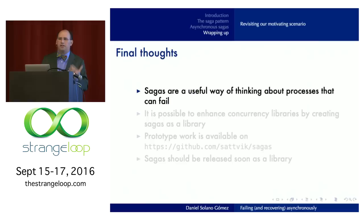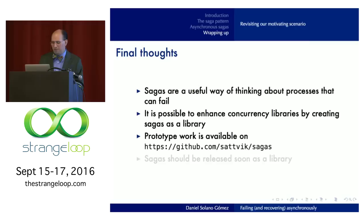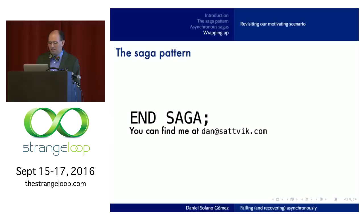My conclusions from looking into this are that sagas are a very useful way of thinking about error recovery. When you have a complex process, how can we break it down into simpler steps that we can then manage? Most importantly for me, I can create libraries that will implement this, which gives me better concurrency building blocks. I can build more robust, reliable systems with less work, because I already spent a lot of time thinking about it up front and created a library I can reuse — and that other people can reuse. I have some work out there, it's still very raw, but eventually I will release a library and put it up on Bintray or something. So that's it. Thank you very much. I appreciate your time.